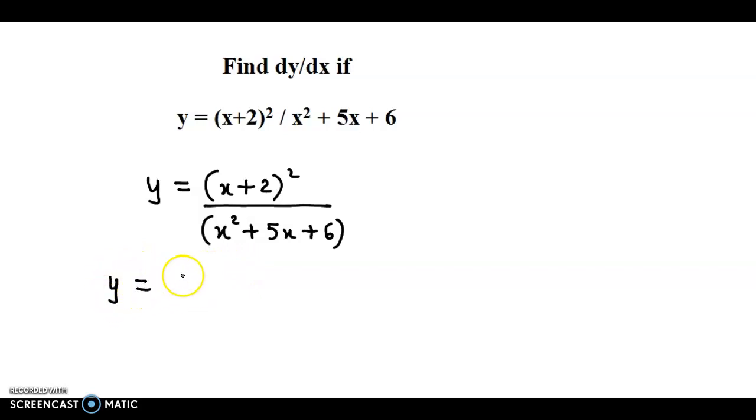So the numerator as it is: (x+2)² or (x+2)(x+2). And if we factorize this quadratic expression, we obtain the factors as (x+2) and (x+3). So we have factorized the denominator.